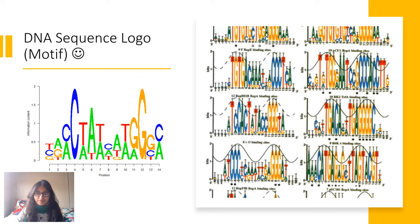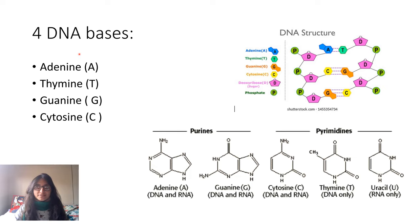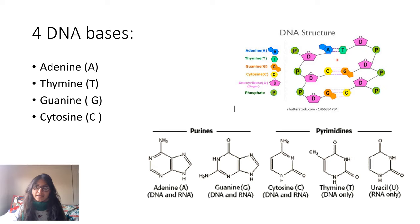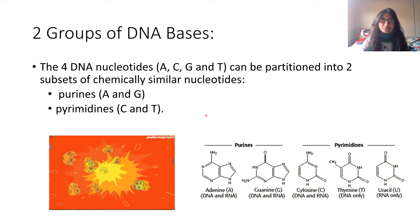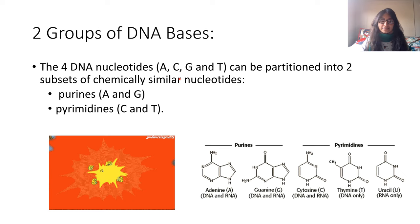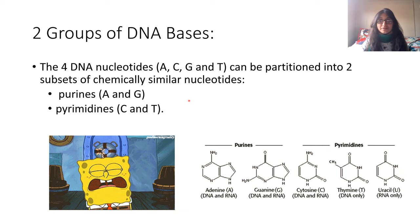This is really important, so let me review a little bit of the biology behind this. In DNA, we have the nucleotides adenine, guanine, cytosine, and thymine — four different DNA bases. For hydrogen bonds, adenine binds with thymine, and cytosine binds with guanine. So we have these two groups of DNA bases. The four DNA nucleotides — A, C, G, and T — can be partitioned into two subsets of chemically similar nucleotides: the purines, adenine and guanine, and the pyrimidines, which are cytosine, thymine, and uracil.